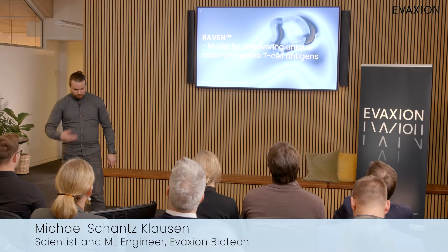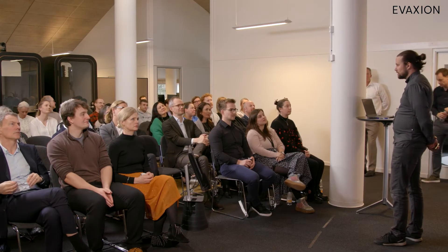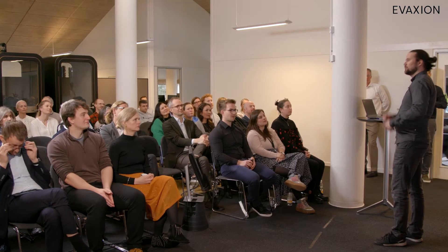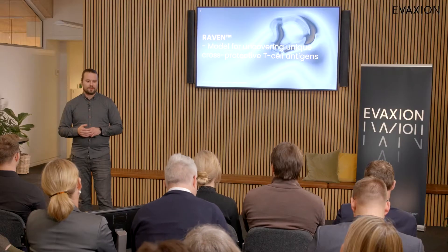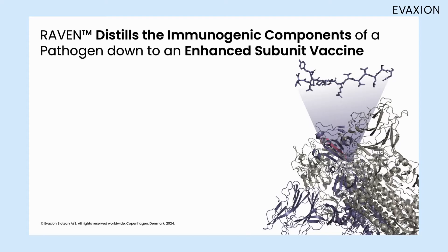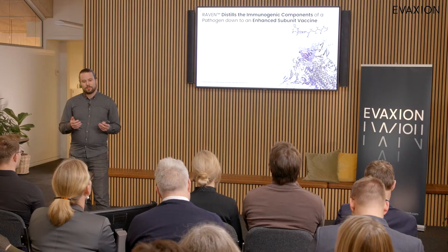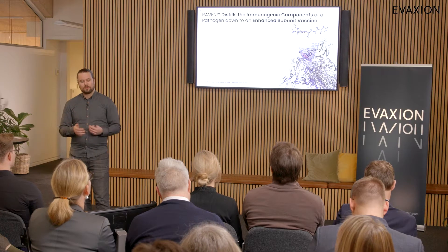I'll talk about RAVEN. RAVEN is our model for making T-cell antigens, something that we think has been quite under-appreciated in infectious disease vaccines. Our key goal here is to distill down the immunogenic component in the whole pathogen into something that is easily produced and very immunogenic.